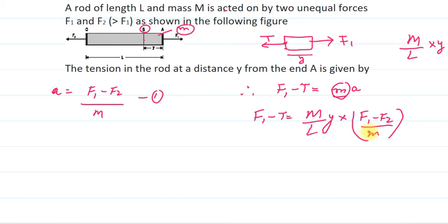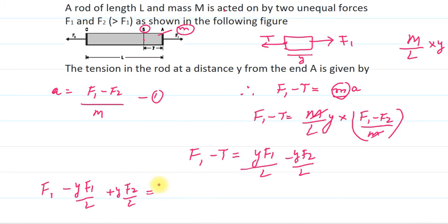So students, this way our expression is forming. M and M will cancel, and our answer is like this: F1 minus T equals we can simplify this. It is yF1 upon L minus yF2 upon capital L. So from here the tension expression will become F1 minus yF1 upon L plus yF2 upon L equals to tension.